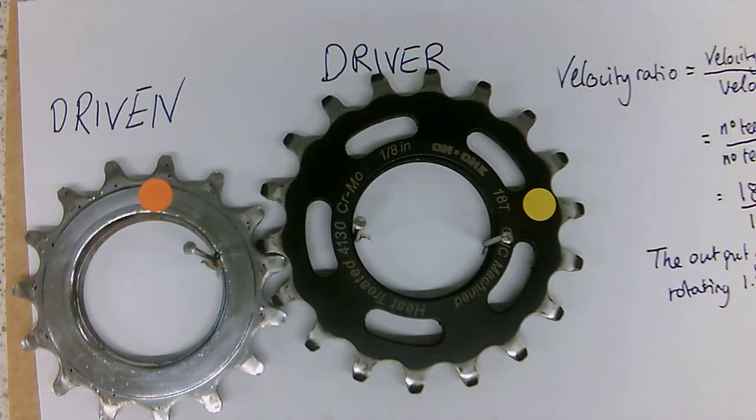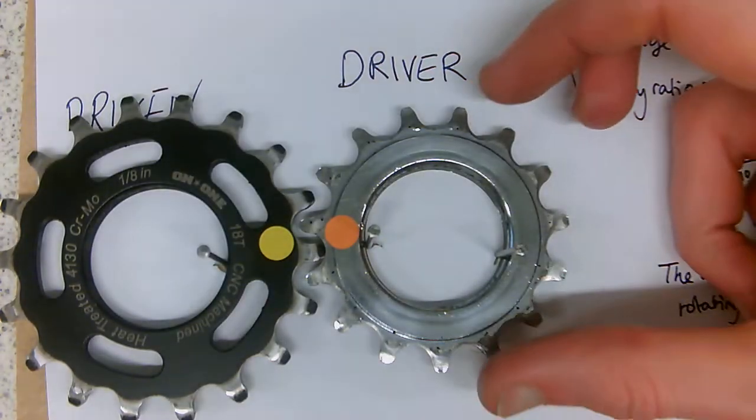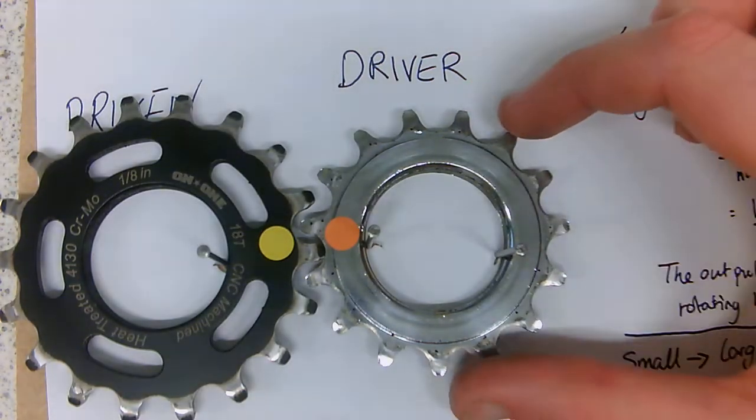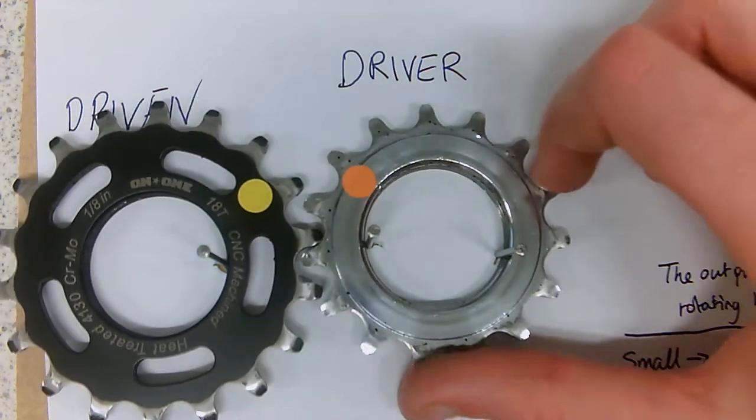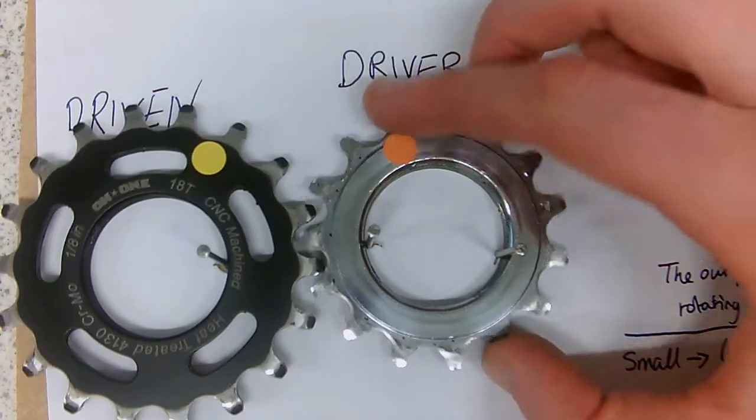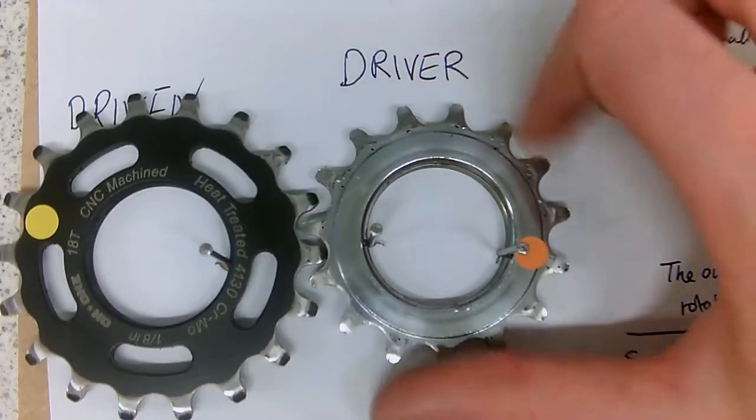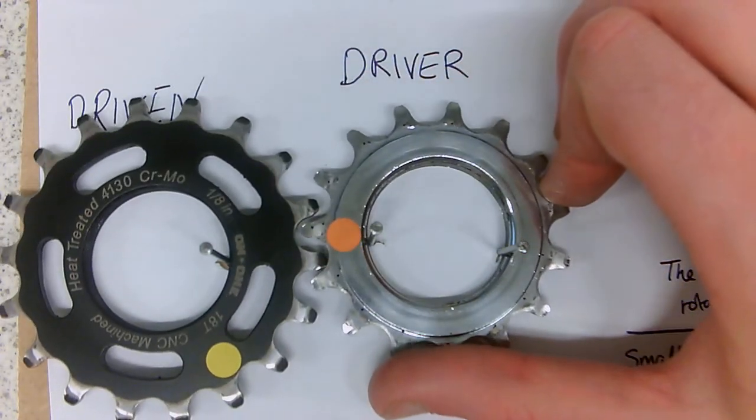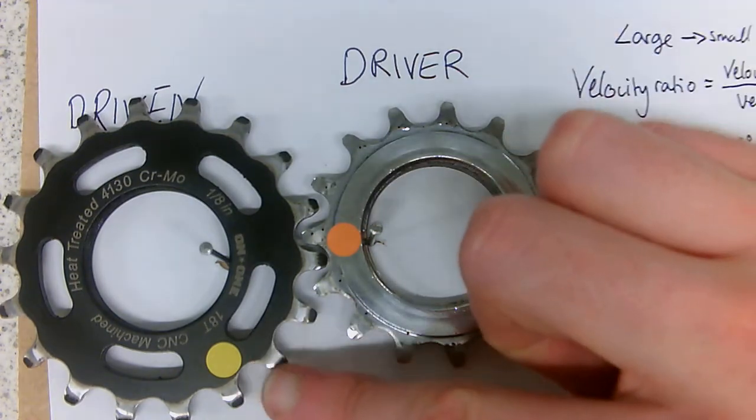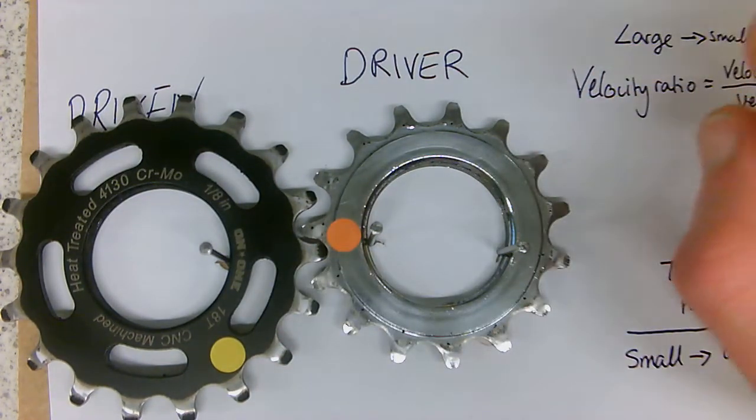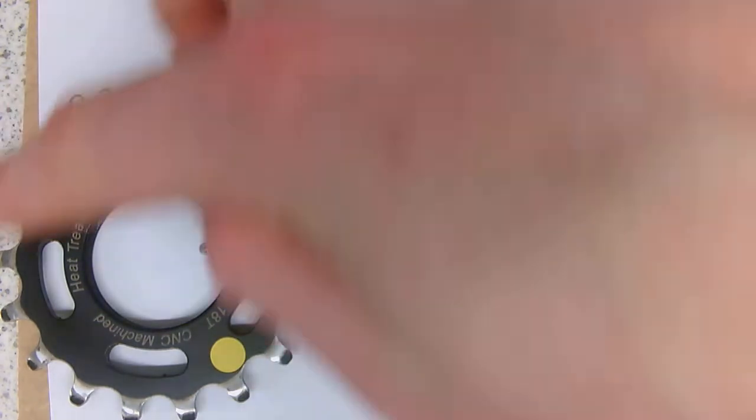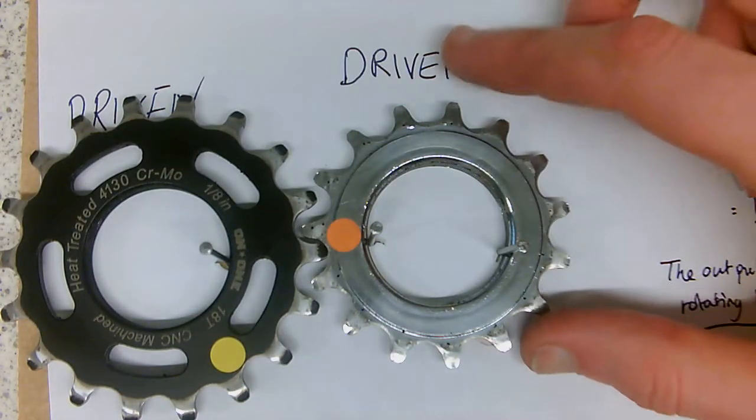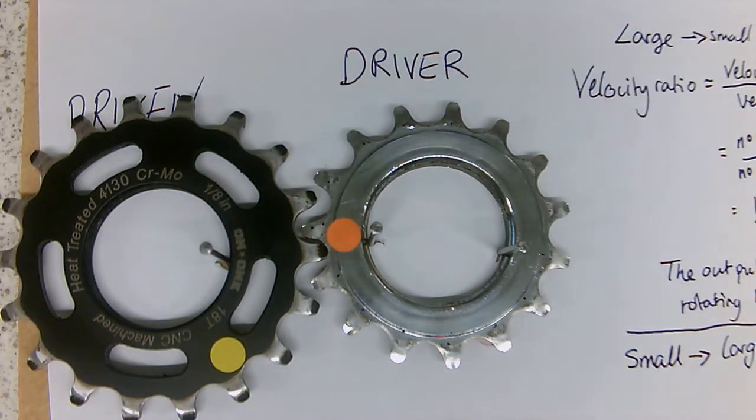Now we're going to swap these over and see what effect that has. Now we've swapped these two cogs over. So now our driving gear, our driver gear is the small one. So now you can see, for one revolution of our driver gear, we can see that our driven gear does not make a full revolution. That means that its rotational speed is less. It has been decreased.